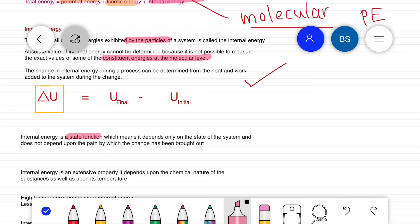Internal energy is an extensive property. It depends upon the chemical nature of the substance as well as its temperature.